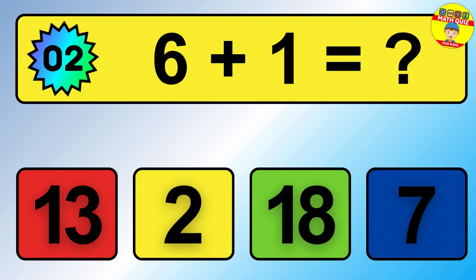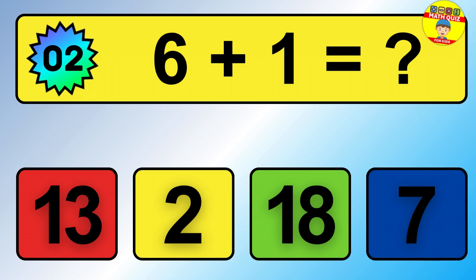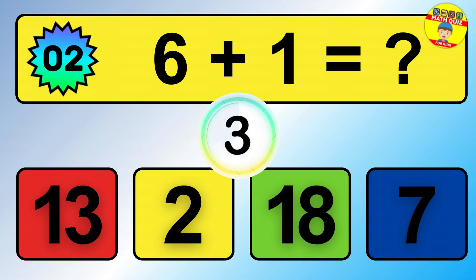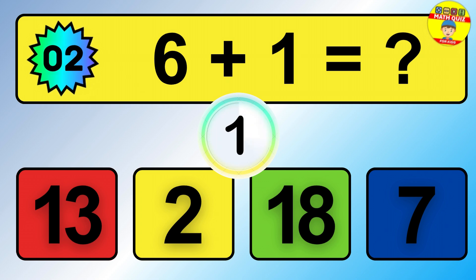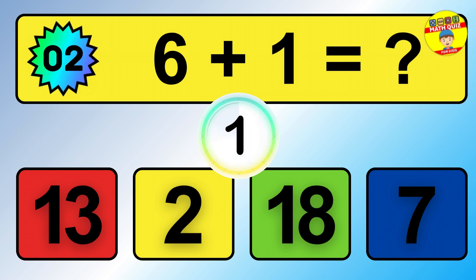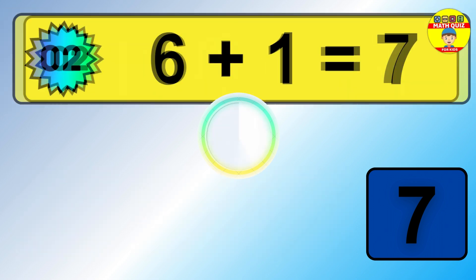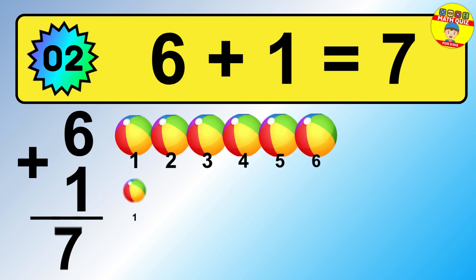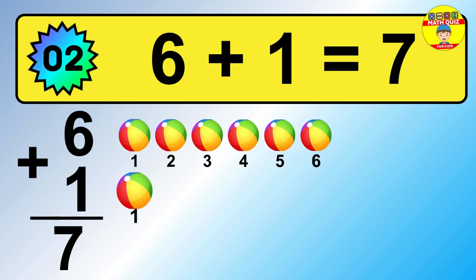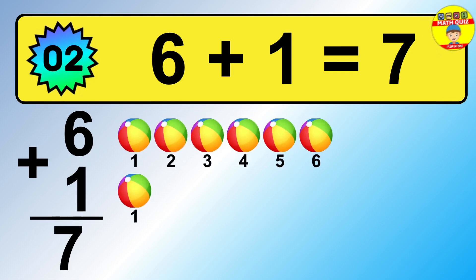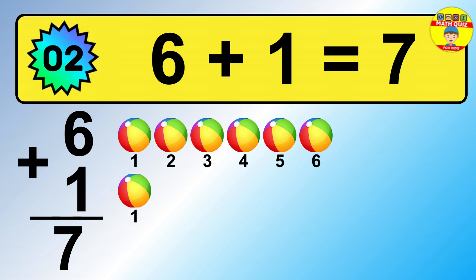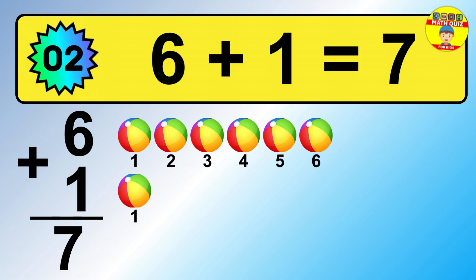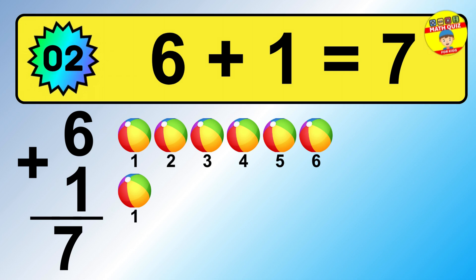Question 2. 6 plus 1 equals what? So the answer is 6 plus 1 is 7. Let's count it: 1, 2, 3, 4, 5, 6, 7.